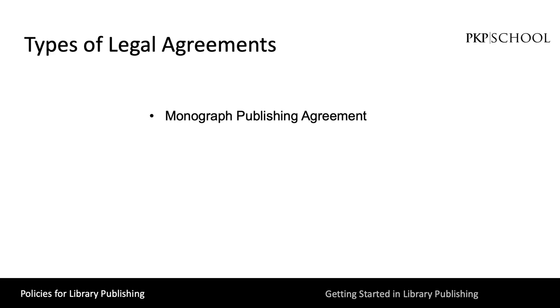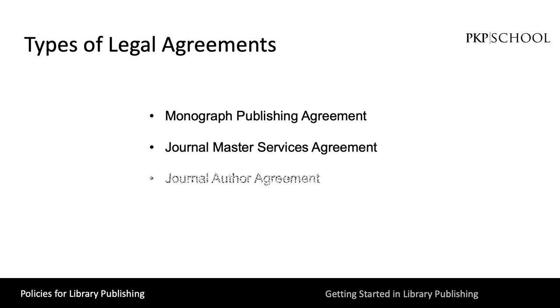There are four standard types of legal agreements we will discuss, stemming from the most common types of publications for library publishers: monographs, journals, independent digital publications, and campus publications. We will explore each license in more detail on the next several slides.